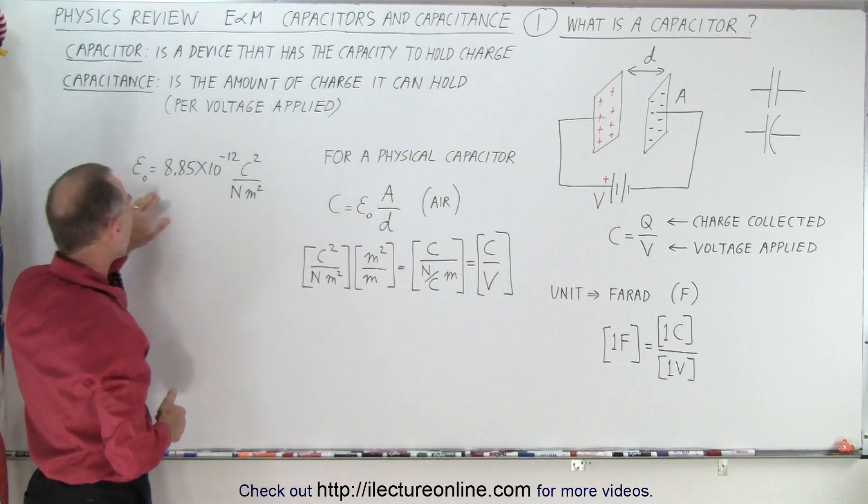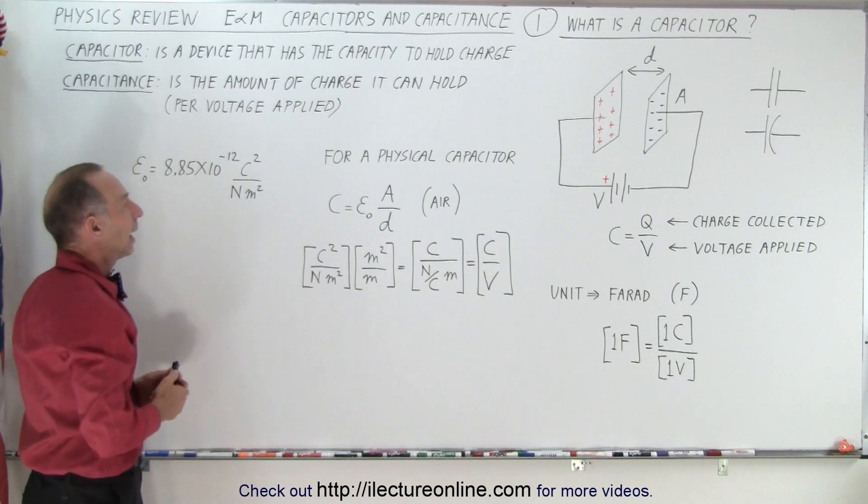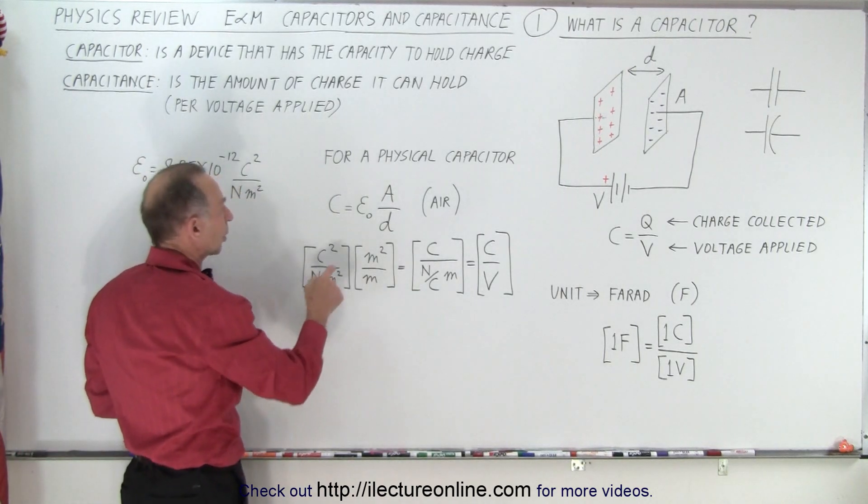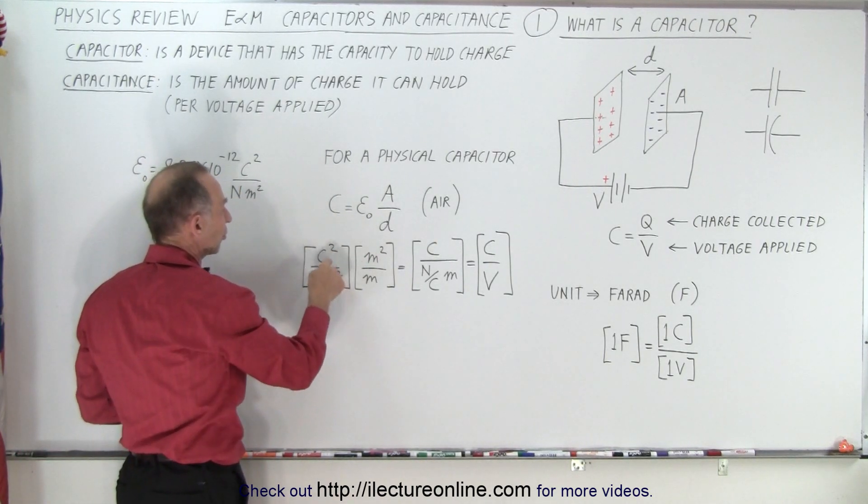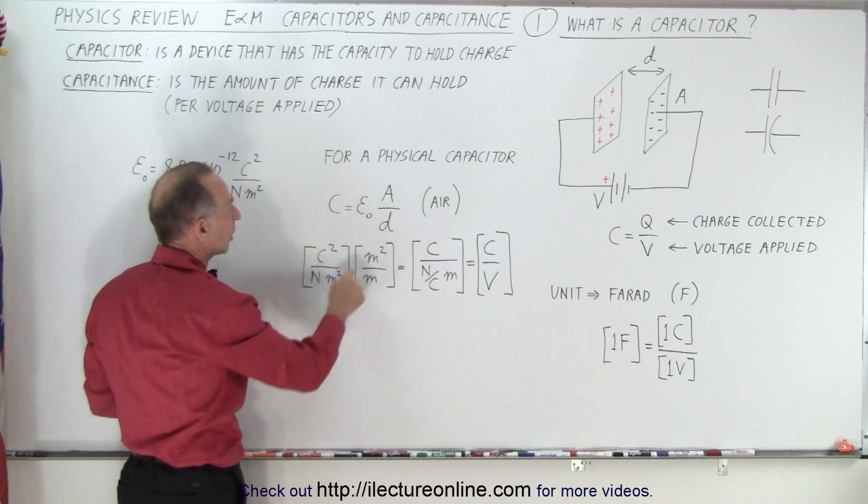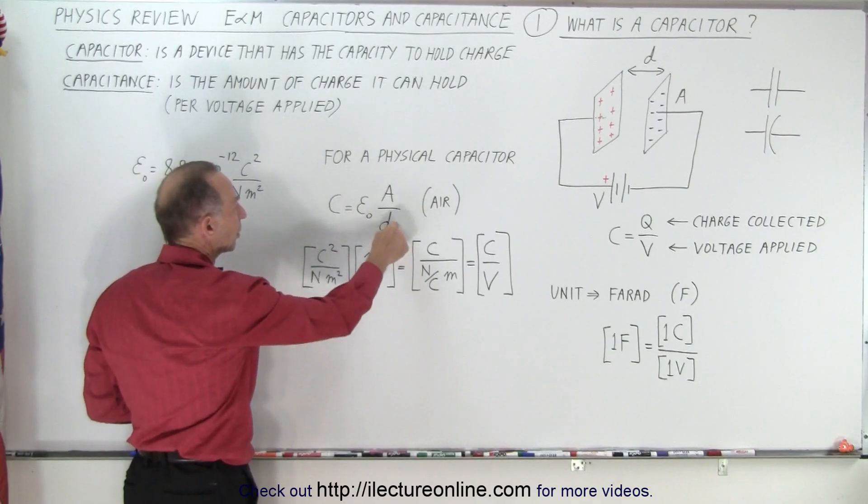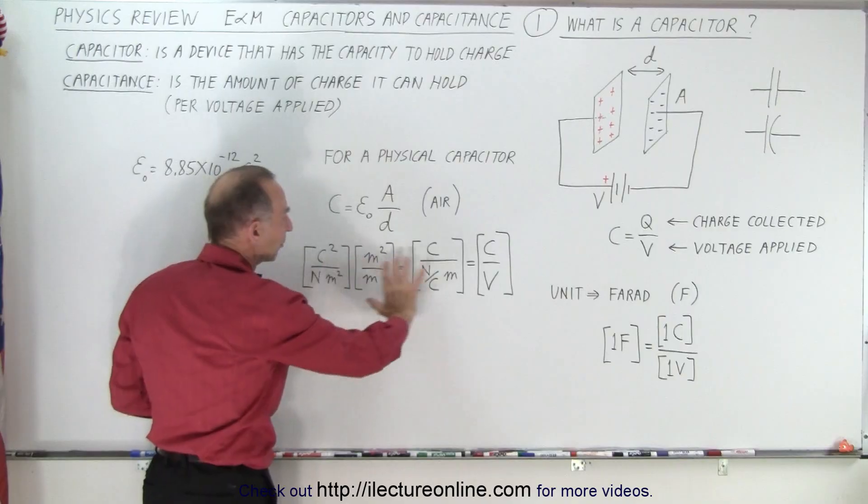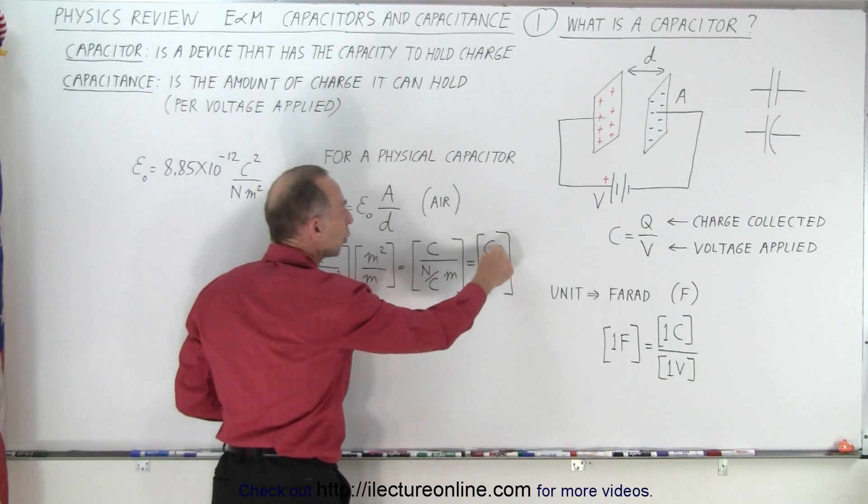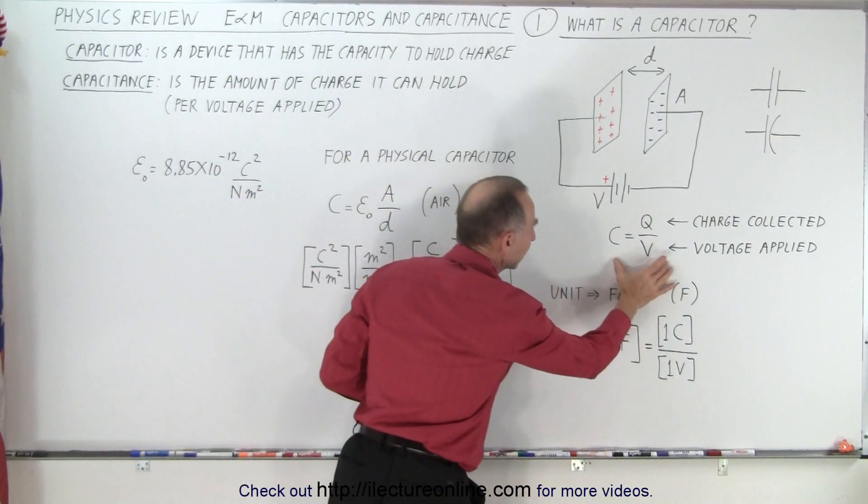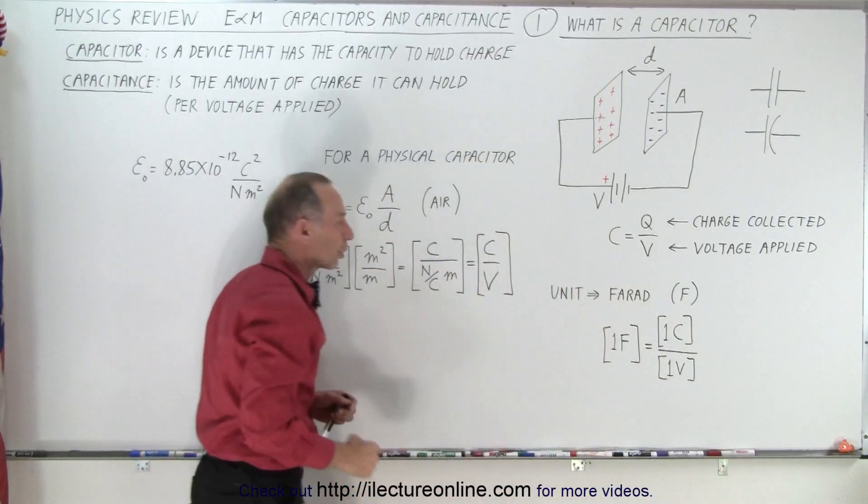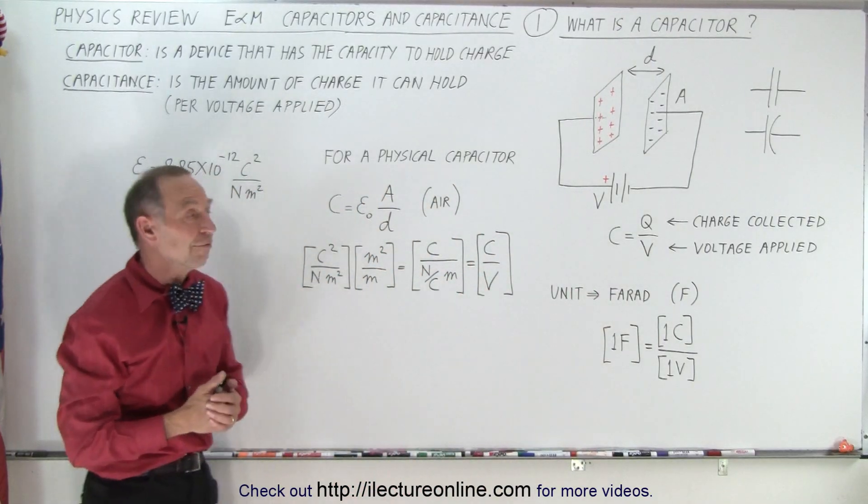Notice that the epsilon sub-naught has this value right here and also notice that the units work out because epsilon sub-naught has units of coulomb squared per newton meters squared. Area is meters squared. Distance is meters and when you simplify that you end up with coulombs per volt which of course again is the units for capacitance which we then call Farad.